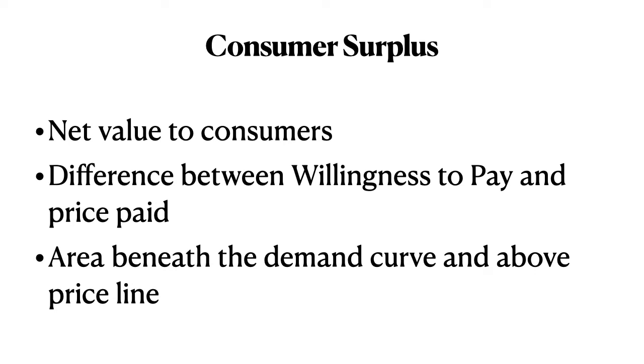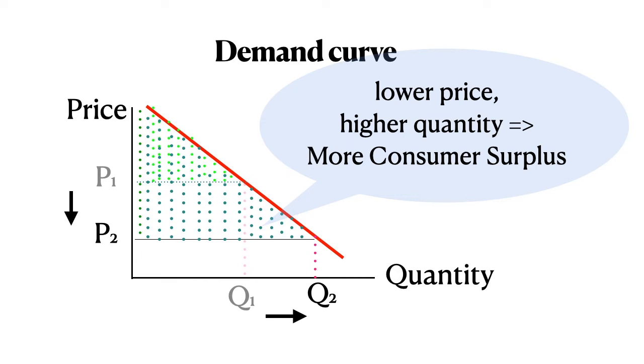Now, consumer surplus will change depending what the price is. If we have a lower price, we will have more consumers able to afford it. And so we will increase our quantity, our number of consumers from Q1 to Q2. But those early consumers, the ones to the left, because they're paying much less, their net value is going to go up substantially higher.